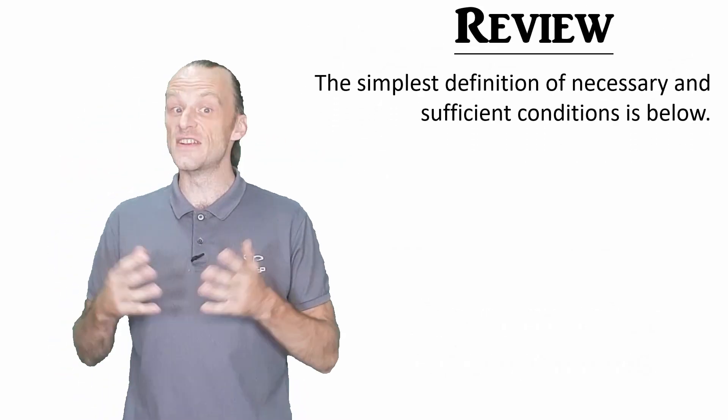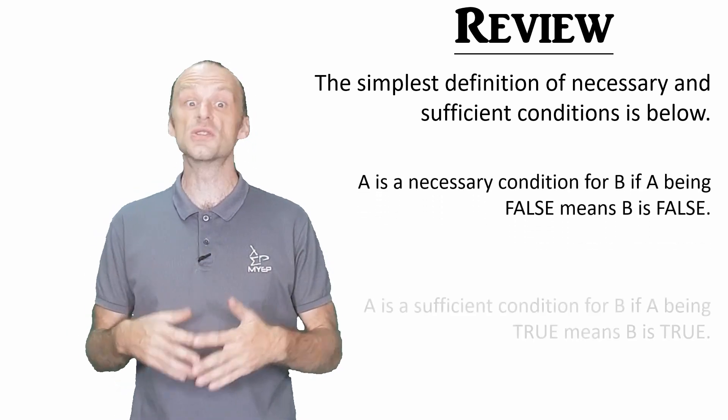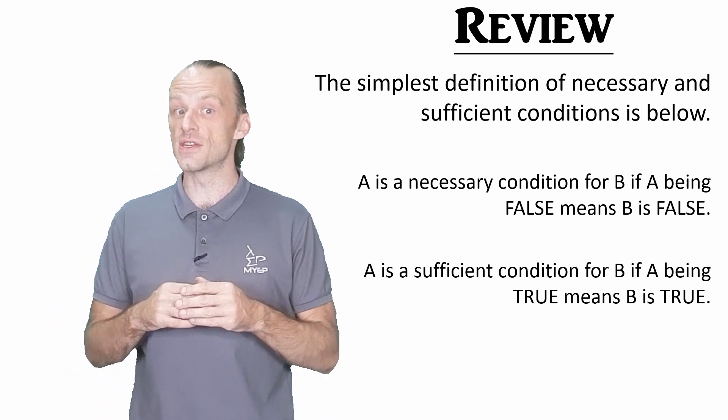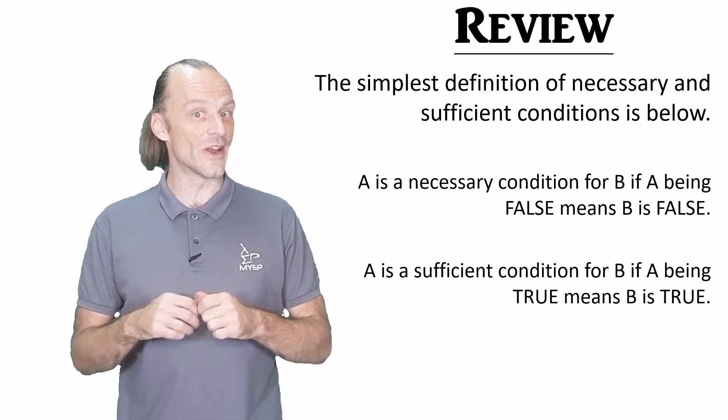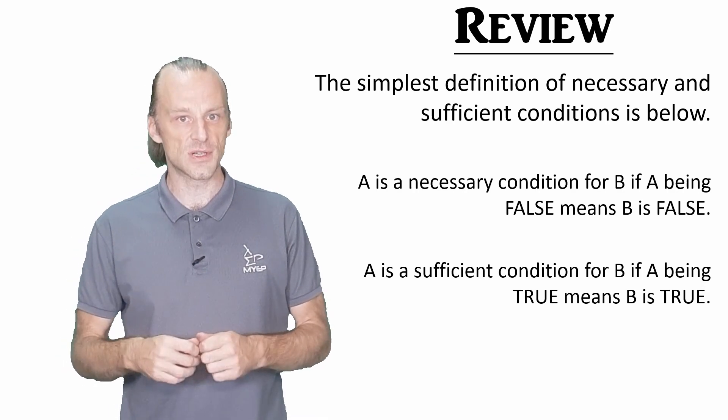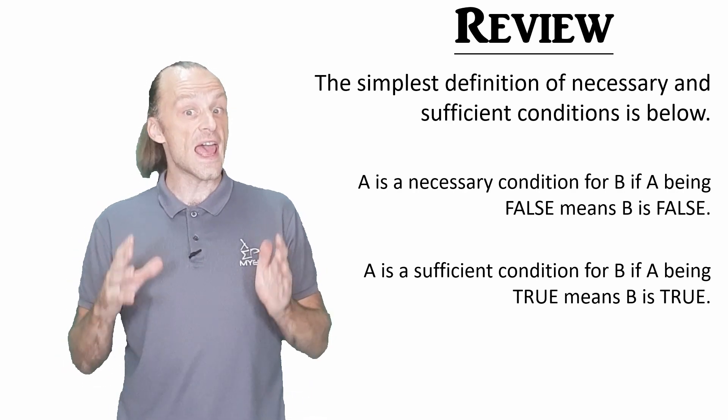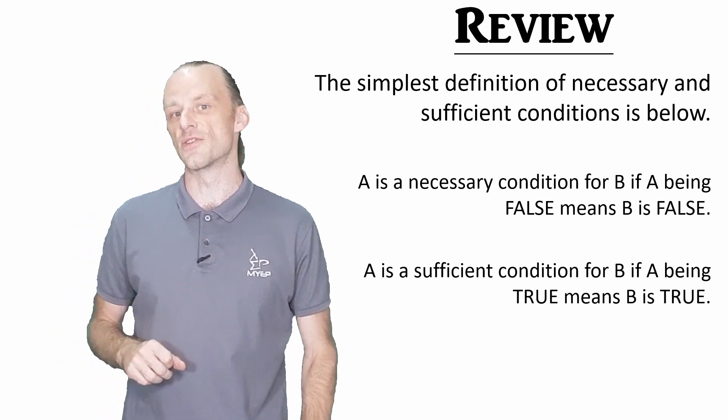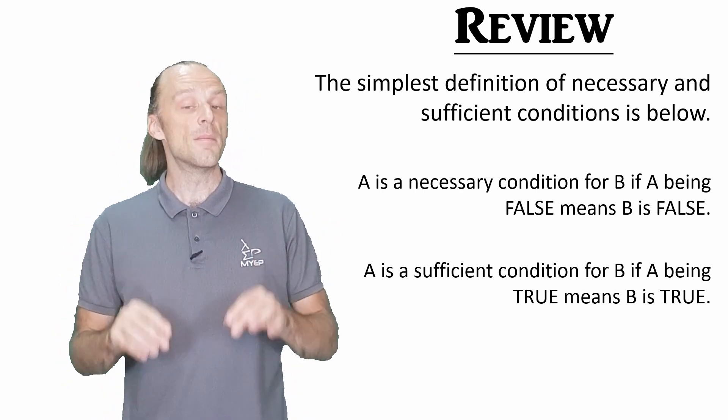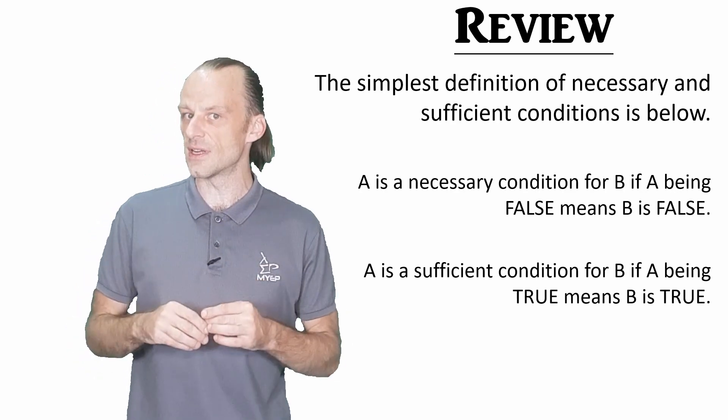To review, this is probably the simplest version of necessary and sufficient conditions that we saw in the main video. A is a necessary condition for B if, and only if, A being false means that B is definitely false. On the other hand, A is a sufficient condition for B if, and only if, A being true means that B is definitely true.